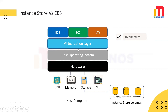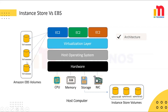On the other hand, EBS volumes are network-attached volumes that are separate from the EC2 instance. They are more like traditional hard drives and are not tied to the life cycle of the instance. You can detach the EBS volume from one instance and attach it to another, preserving the data.